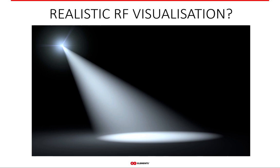A good example of coverage visualization is provided by visible light, which is also an electromagnetic wave — just like a 5 GHz RF signal, except at much higher frequencies. The circular spotlight on the ground is the coverage itself, and the flashlight can be compared to an antenna. Unlike visible light, RF electromagnetic waves are invisible, which makes visualizing RF coverage more obscure.